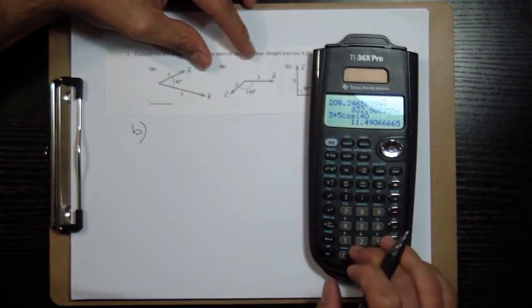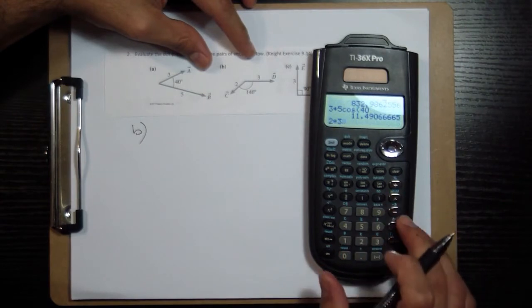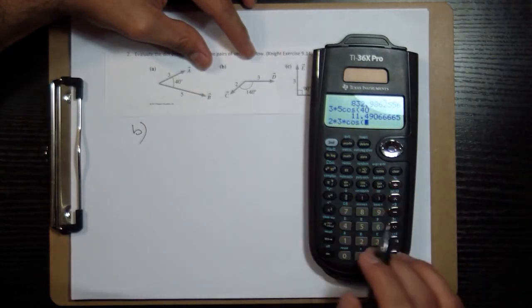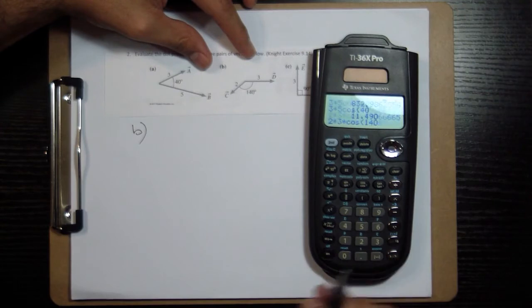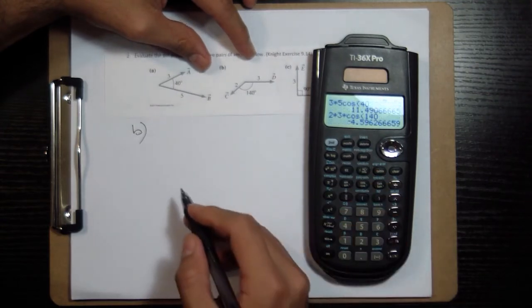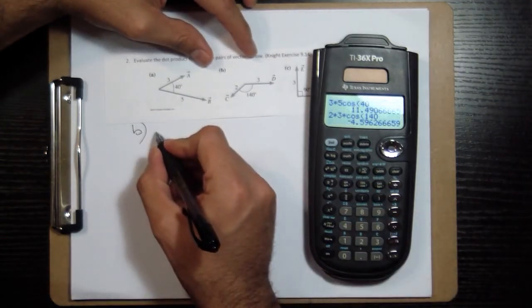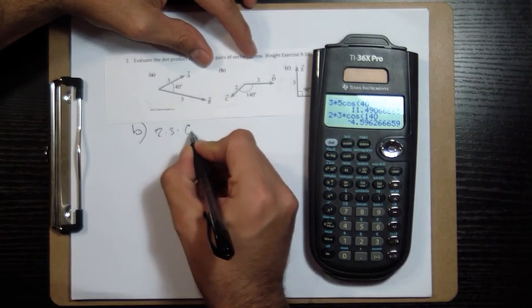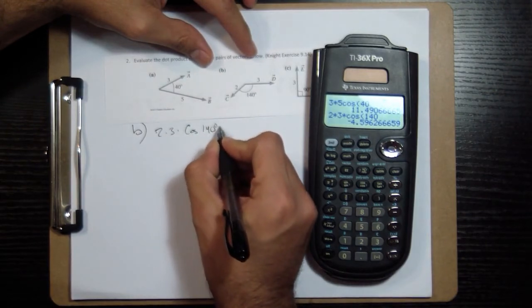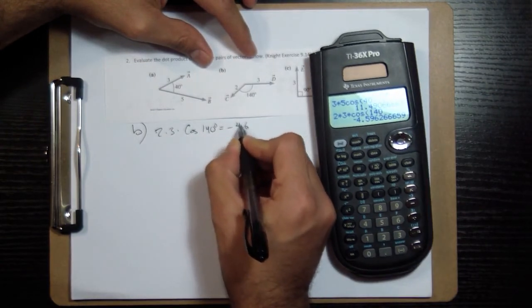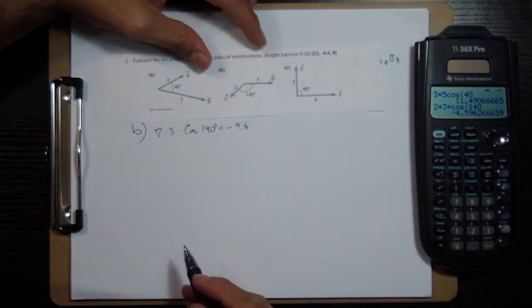For B, we do the same thing: two times three times the cosine of the angle, 140 degrees, and we get negative 4.6. So two times three times the cosine of 140 is negative 4.6, which matches the negative 4.6.